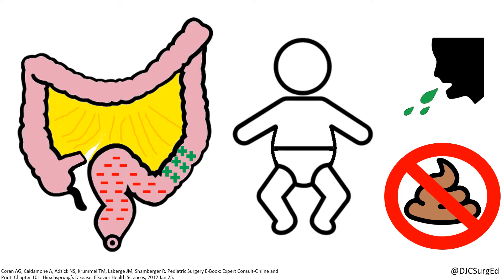10% of neonates can present with fever, abdominal distension, and diarrhea, secondary to Hirschsprung-associated enterocolitis, which can be life-threatening if unrecognized.